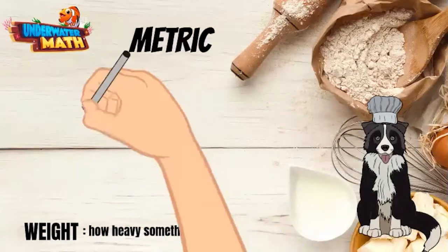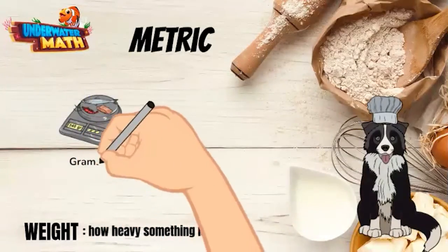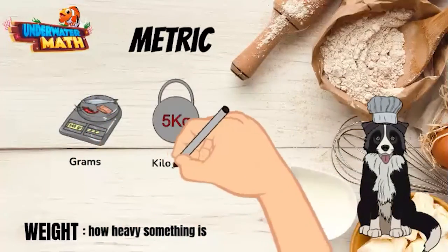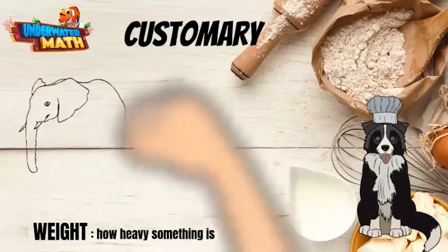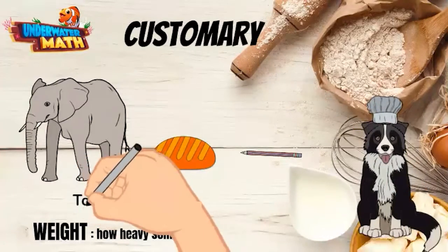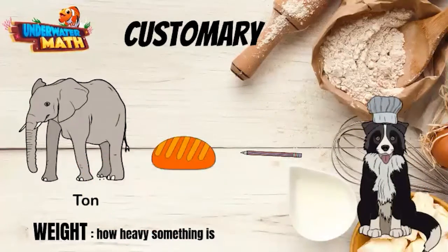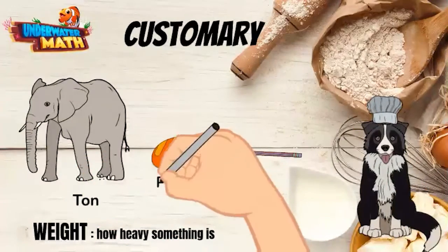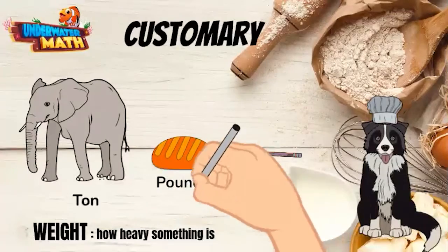Weight is how heavy something is and can be measured using grams or kilograms in the metric system, or tons, pounds, and ounces in the customary system. Tons are about the weight of an elephant, and a pound is roughly the weight of a loaf of bread.